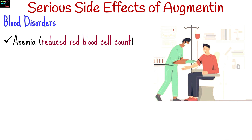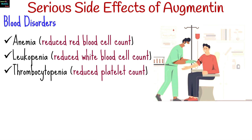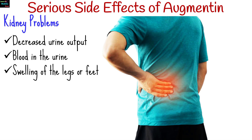In very rare cases, Augmentin may affect blood cell counts, leading to anemia, leukopenia, and thrombocytopenia. Some individuals may experience kidney-related side effects, such as acute interstitial nephritis, which can cause decreased urine output, blood in the urine, swelling of the legs or feet, and fatigue or weakness.